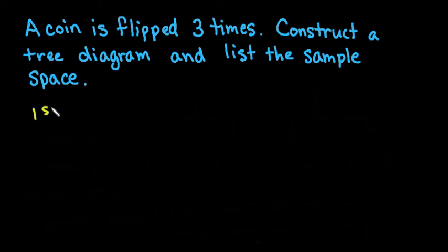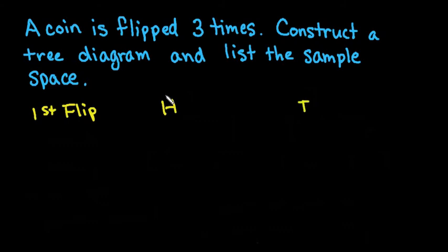On the first flip, we can either get heads or tails. Those are the only two possibilities when we flip our coin.